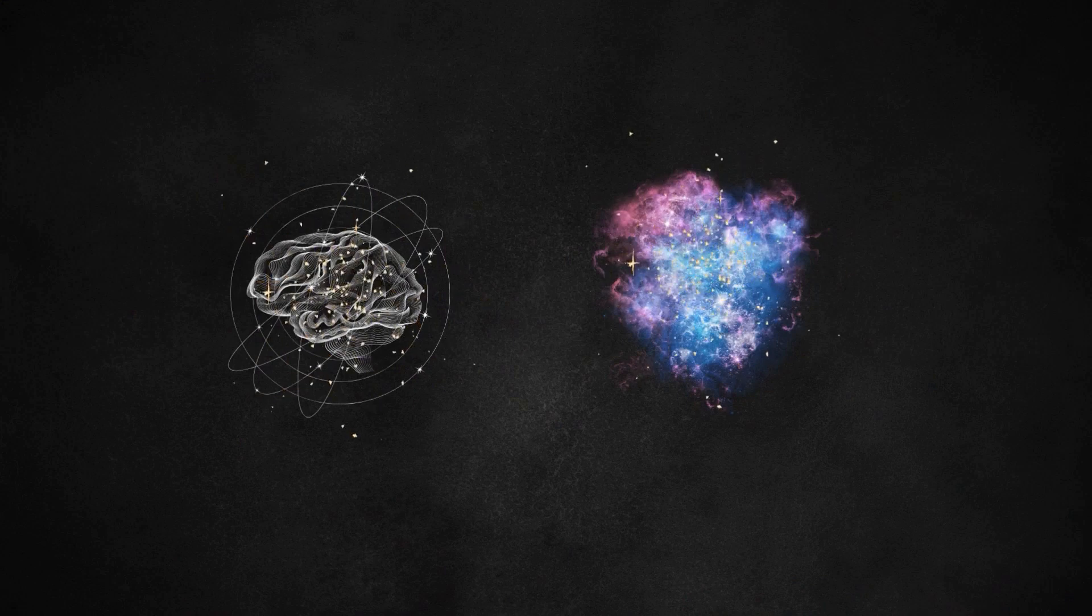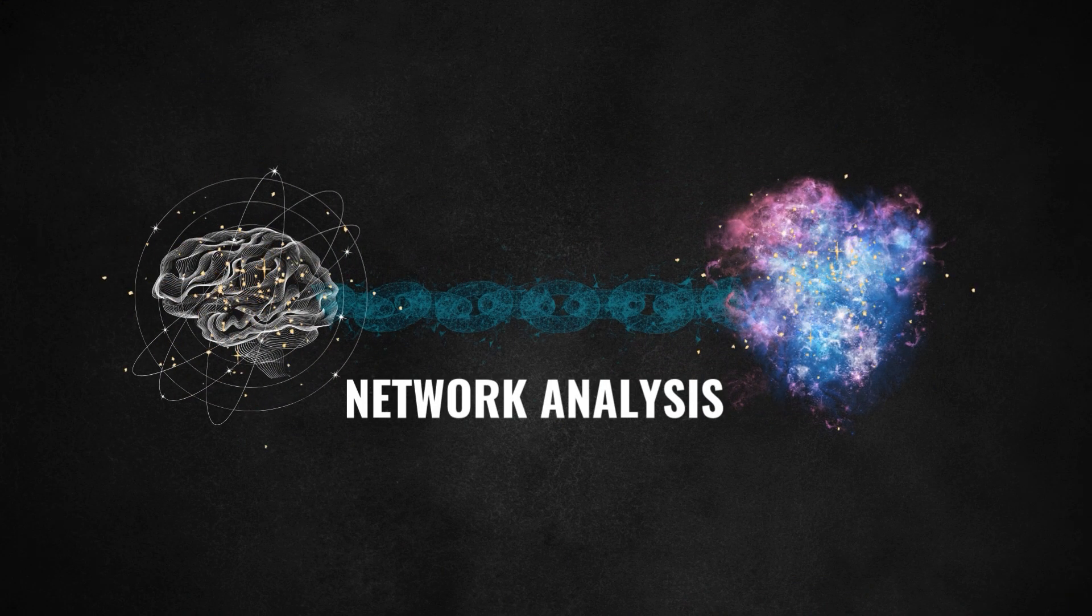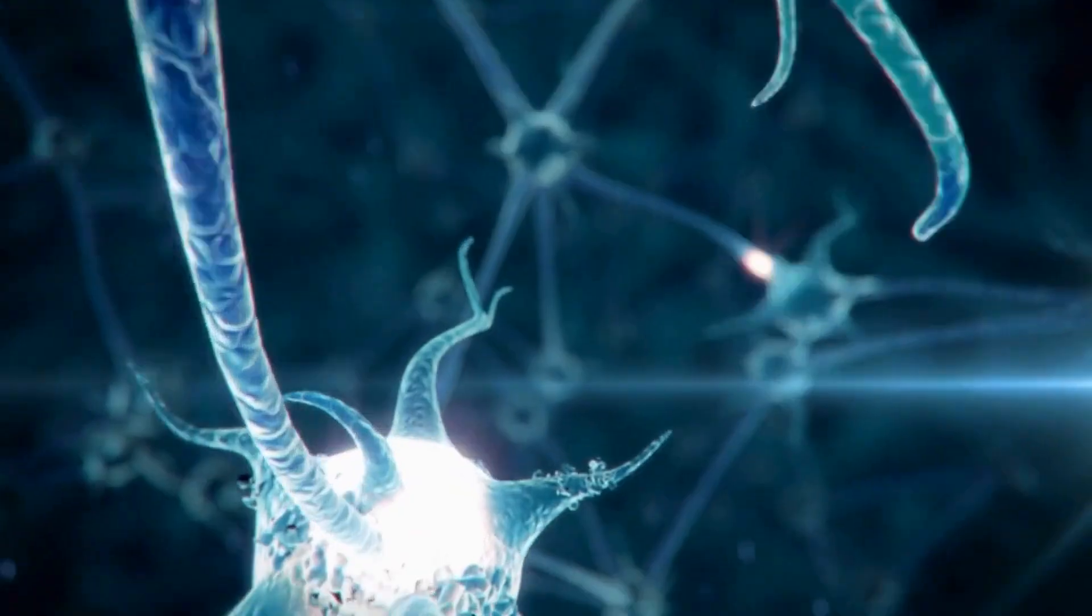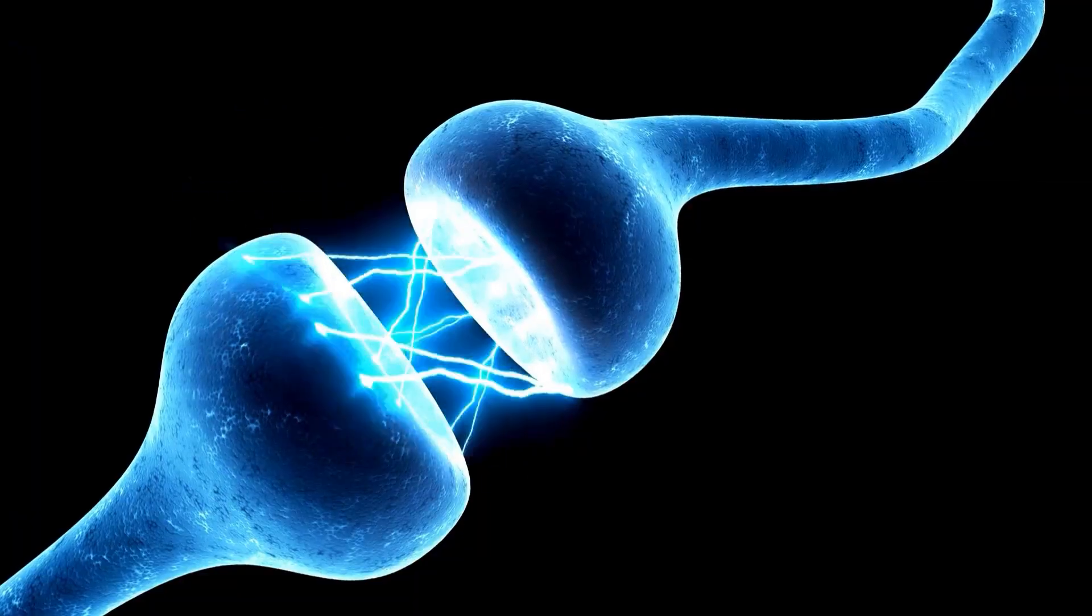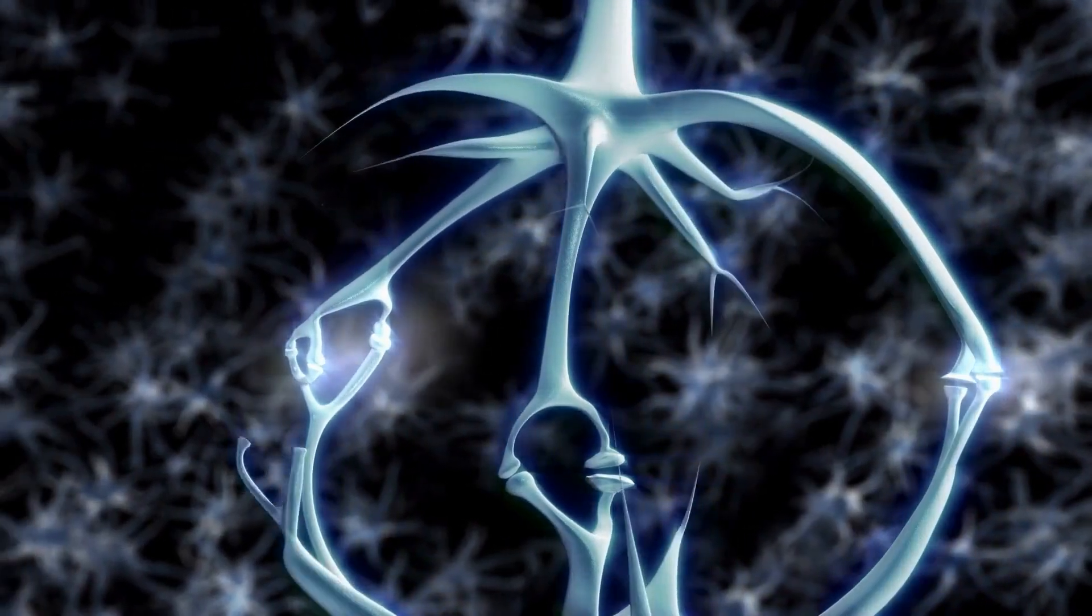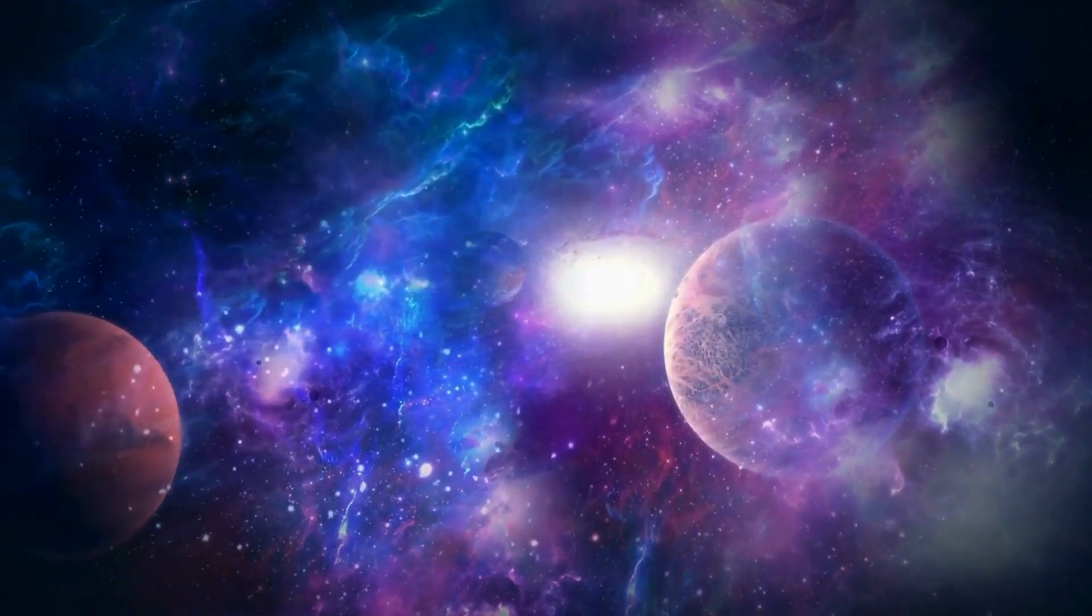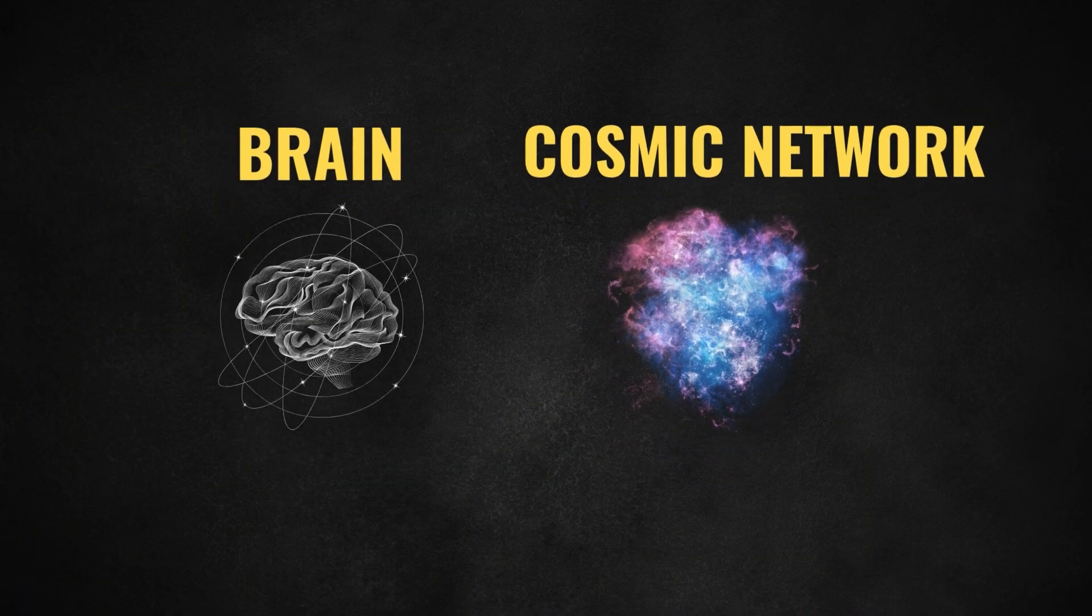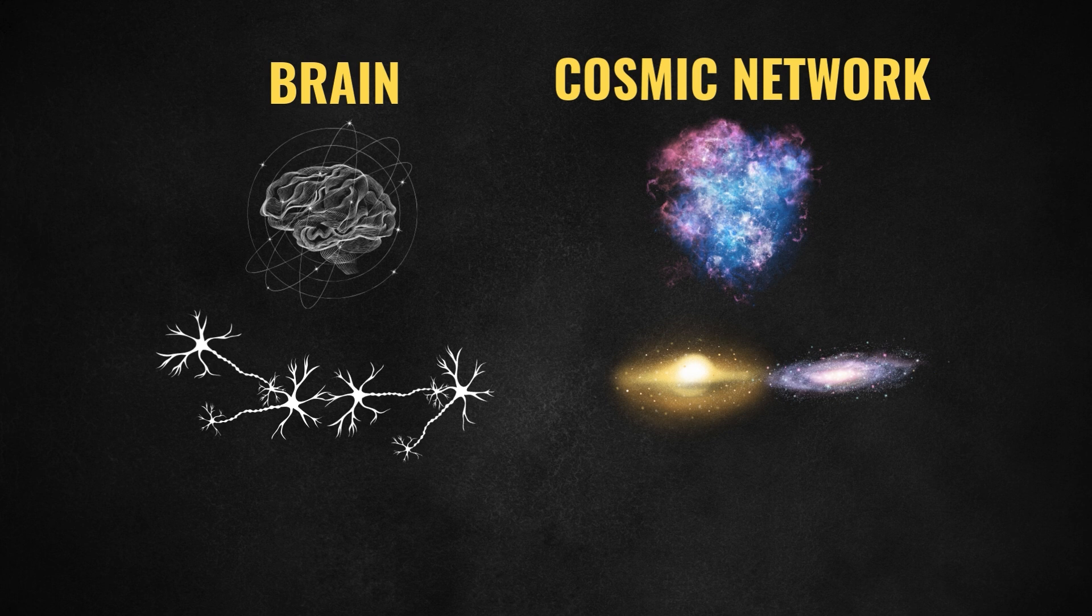One can't help but wonder if this is just a coincidence. It's not over. The researchers also conducted a network analysis between the brain and the cosmic web. There are surprising similarities here as well. For example, neurons in the brain are considered as nodes and they connect with each other through synapses. The nodes of the cosmic web are galaxies. So in a way, neurons of the cosmos are them.